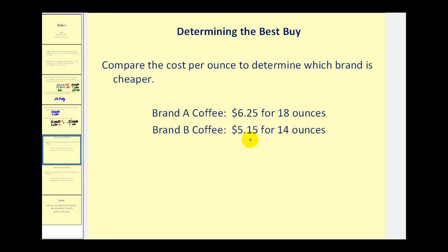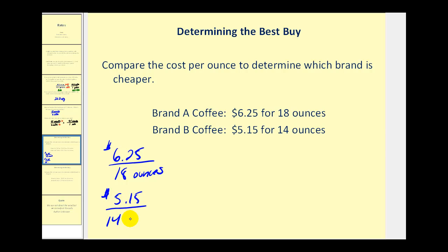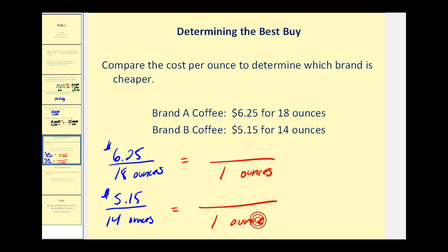Let's write our rates and then determine the unit rates. The first rate is $6.25 per 18 ounces, and brand B is $5.15 per 14 ounces. We'll rewrite these as unit rates so the denominator will be one ounce in both cases. For brand B we divide by 14, and for brand A we divide by 18, giving us a denominator of one ounce in both cases.